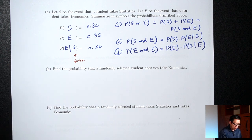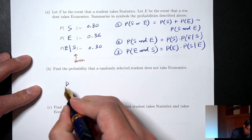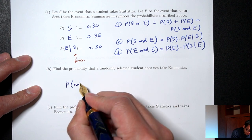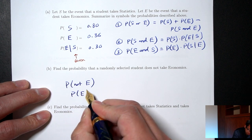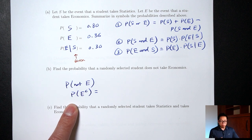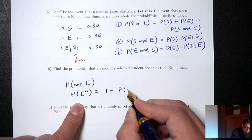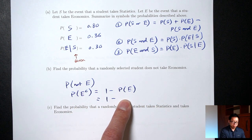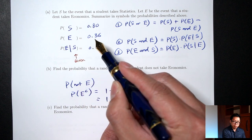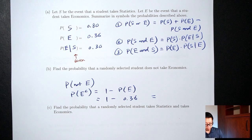Part B asks for the probability that a randomly selected student does not take economics, which is the complement of E. Using the complement rule: probability of not E equals one minus probability of E equals one minus 0.36 equals 0.64.